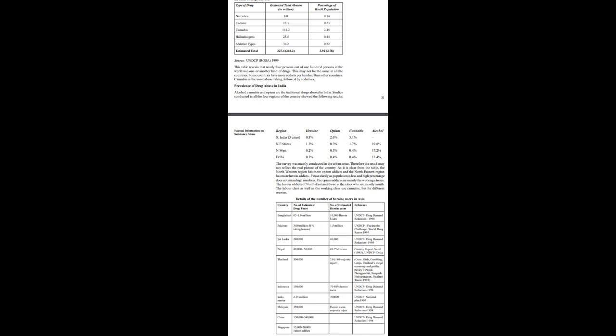Drug use prevalence continues to be stable around the world, according to the 2015 World Drug Report of the United Nations Office on Drugs and Crime (UNODC). It is estimated that a total of 246 million people, slightly over 5% of those aged 15 to 64 years worldwide, used an illicit drug in 2013. Some 27 million people are problem drug users, almost half of whom are people who inject drugs (PWID). An estimated 1.65 million people who inject drugs were living with HIV in 2013. Men are three times more likely than women to use cannabis, cocaine and amphetamines, while women are more likely to misuse prescription opioids and tranquilizers. (World Drug Report, 2015.)